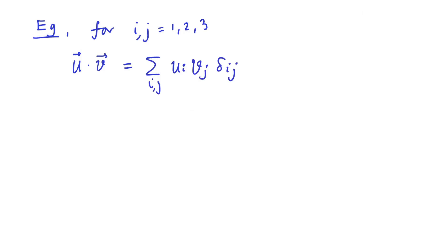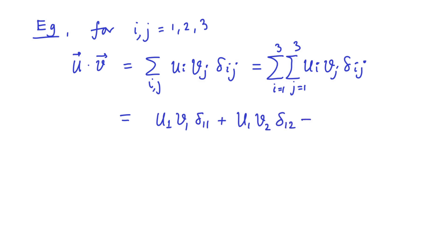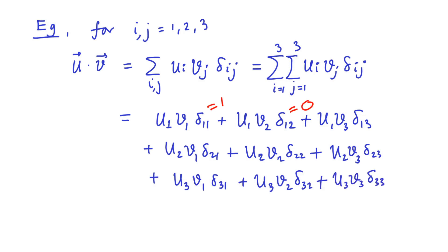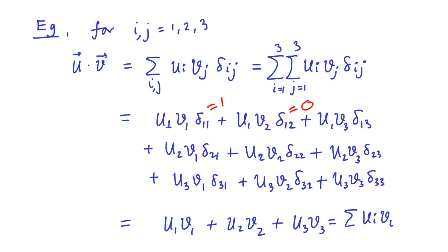Using Kronecker delta, the dot product u·v can be written as the summation over i and j of uᵢvⱼ times δᵢⱼ, which we can explicitly write out as nine terms: u₁v₁·δ₁₁ + u₁v₂·δ₁₂ and so on. By definition of Kronecker delta, δ₁₁ = 1 and δ₁₂ = 0, and so on. Out of nine terms, six terms simply drop out, and the final product becomes u₁v₁ + u₂v₂ + u₃v₃, which is the same as the summation from i=1 to 3 of uᵢvᵢ — the same as the definition we introduced earlier.